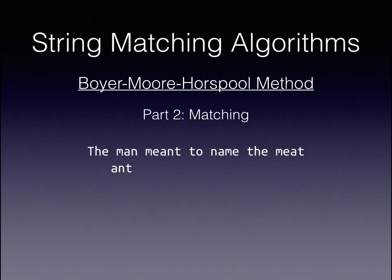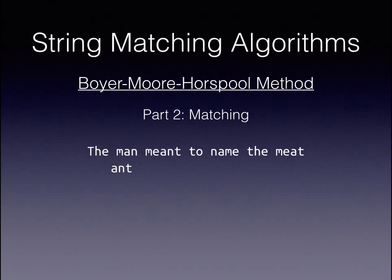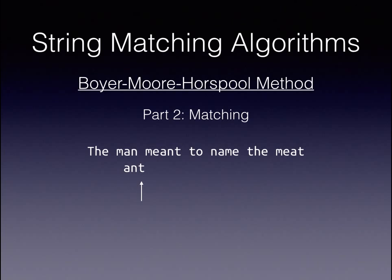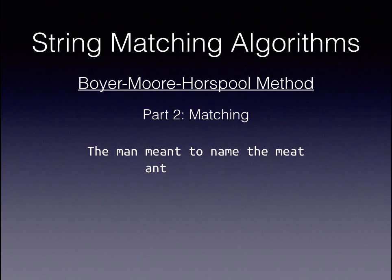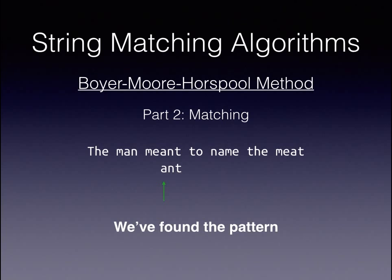We can now resume matching from the end of the pattern. We compare T and A, and we have a mismatch, but this time A is in the rightmost table, so we can align the pattern and the string. We compare T to a space, and again we have no match, so we shift the pattern along. We compare T to the A, and A is in the rightmost table, so we align the pattern and the string, and compare T, then N, then A, meaning we have found the pattern.